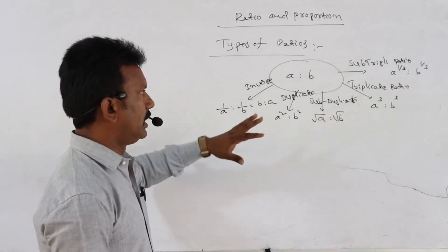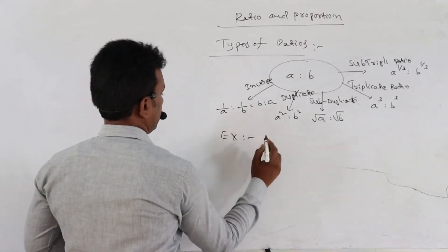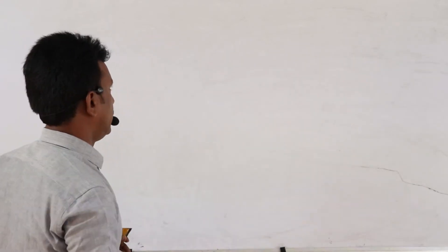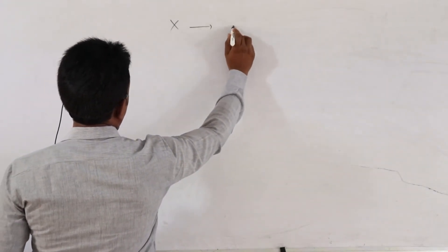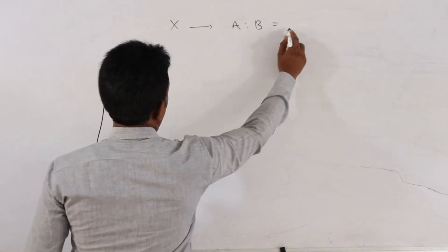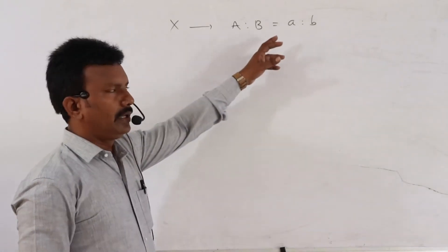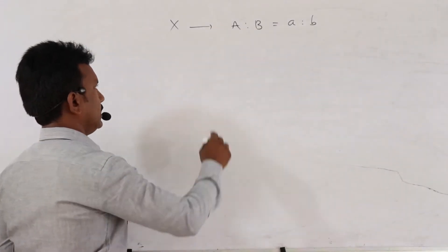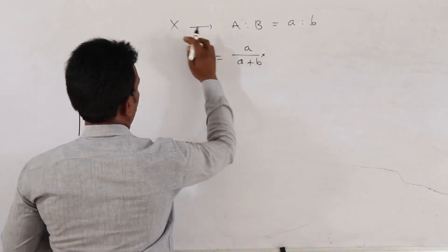We will discuss examples for each type. But first, we are following a useful shortcut. If some amount X rupees is divided between two persons A and B in the ratio a is to b, then the share of A is equal to a divided by (a plus b) into the total amount X.